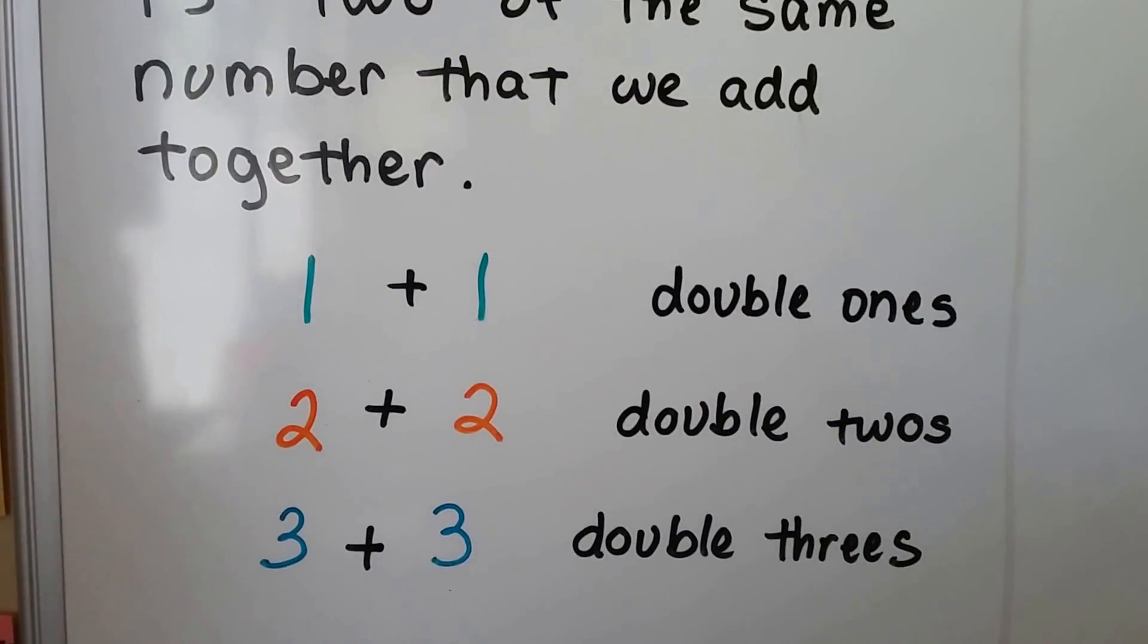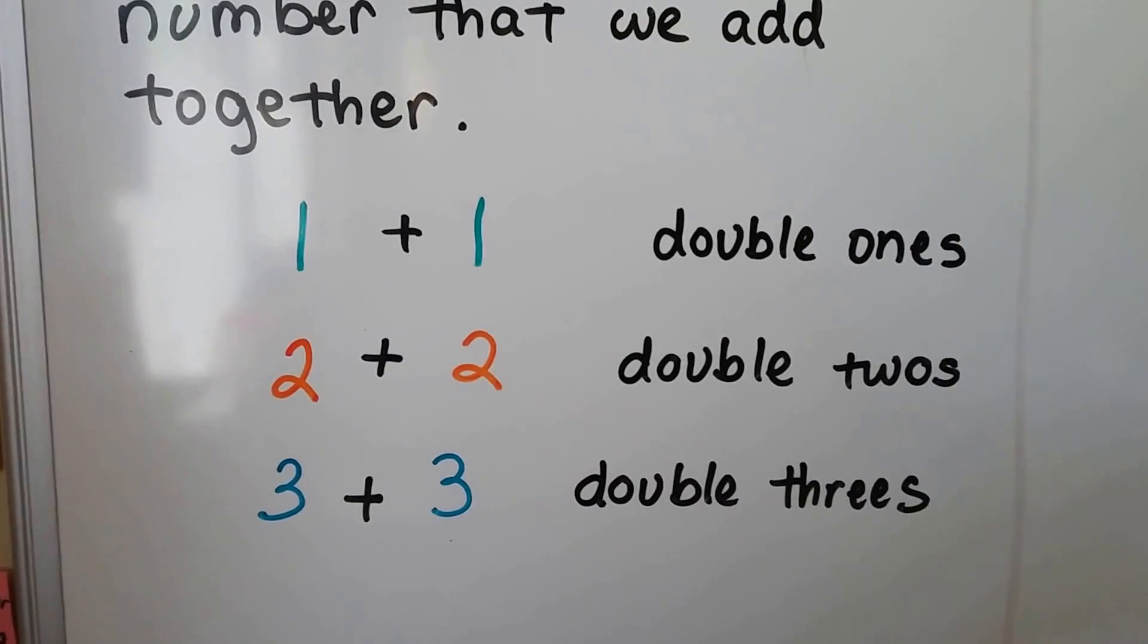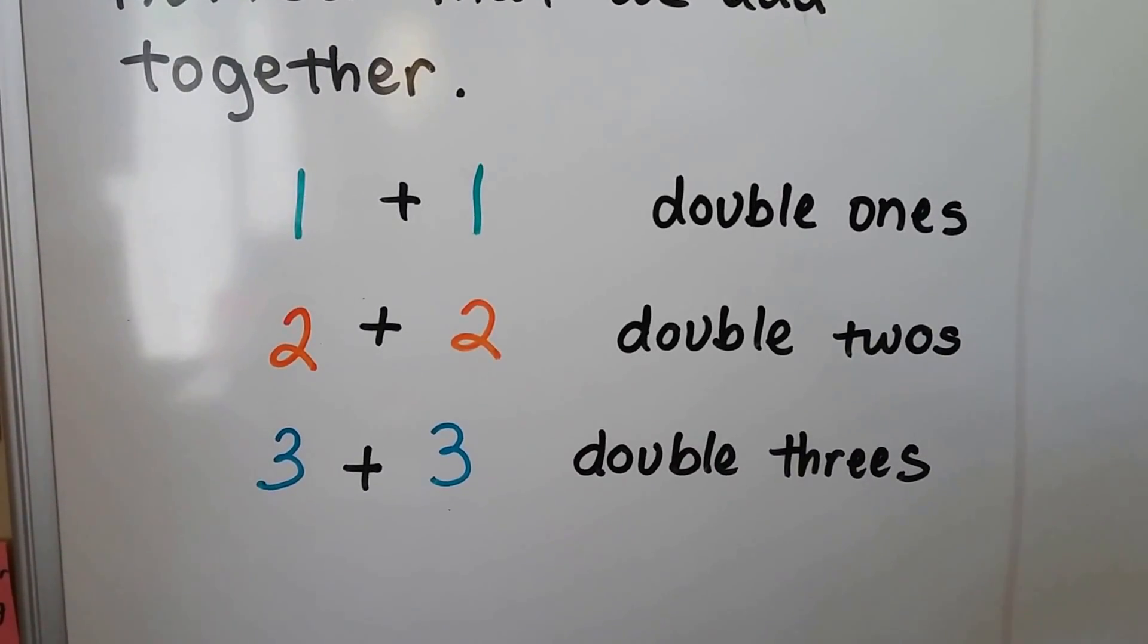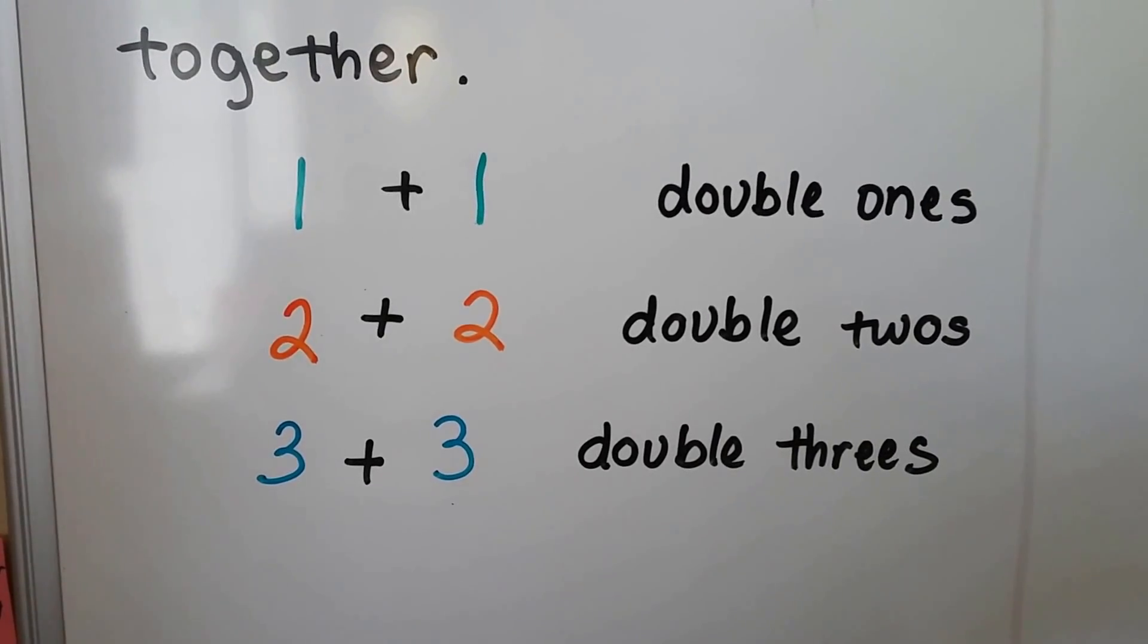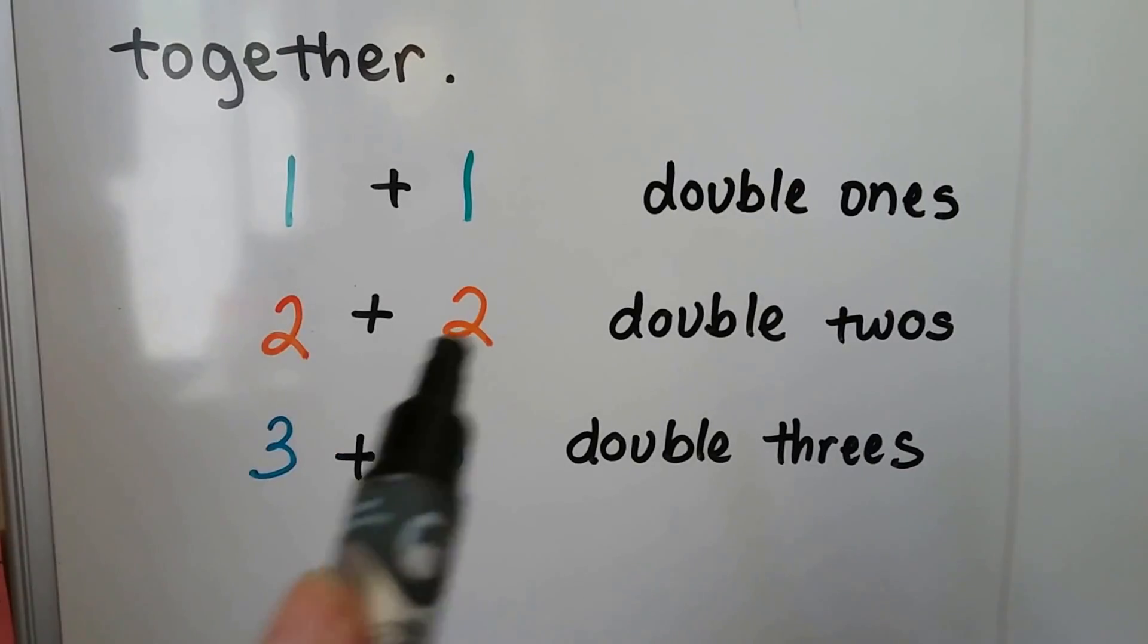It's like one plus one, two plus two, or three plus three. We would have double ones, double twos, or double threes. It's just the same number. We add it to another one just like it. See? Same number. Those are doubles.